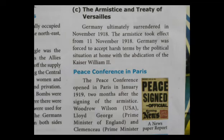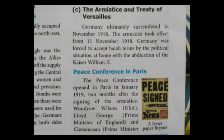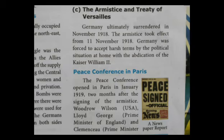Armistice and Treaty of Versailles: armistice means to stop the war. Finally, Germany surrendered in November 1918. The armistice — the war stopped — from 11th November 1918. Kaiser Wilhelm II of Germany abdicated the throne and fled to Holland. Germany was forced to accept harsh terms.